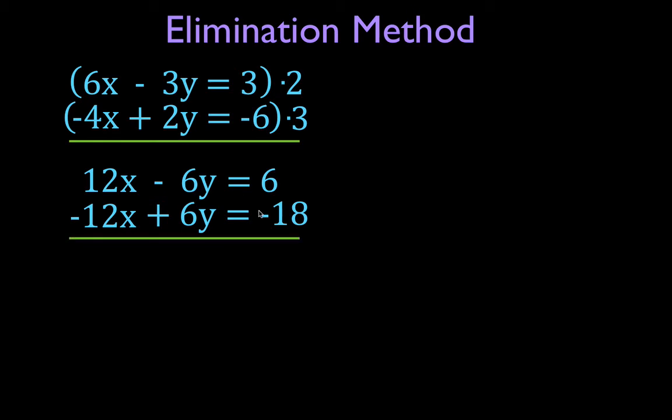And I'm going to add these up. Now you'll notice this is a special case. I'm going to eliminate the y's, but in this case I'm also going to eliminate the x values. So if I add 12 and -12, I get 0. If I add -6 and +6, I get 0. And I get 0 equals -12.